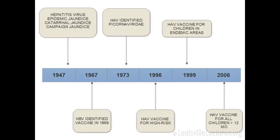Let's walk through the epidemiology. Since 1947, two types of hepatitis were distinguished: the infectious kind — epidemic or campaign jaundice — and the serum kind. Hepatitis A was designated the infectious type, hepatitis B the serum type. Hepatitis B was identified as an agent in 1967 with a vaccine available by 1969. Hepatitis A virus structure was discovered in 1973, and the vaccine was FDA approved in the U.S. in 1995. By 1996, vaccine was recommended for high-risk patients; by 1999 for children in endemic areas; and in 2006 it was incorporated into the routine childhood immunization schedule.